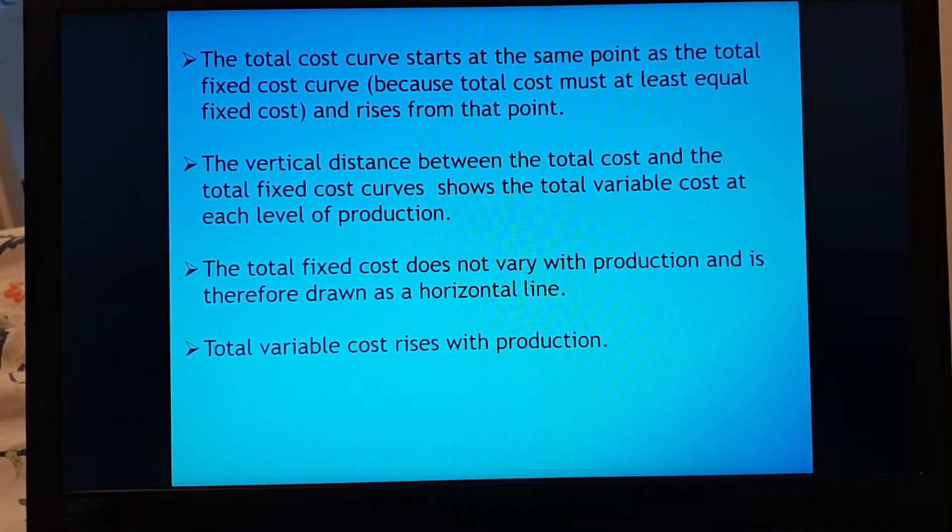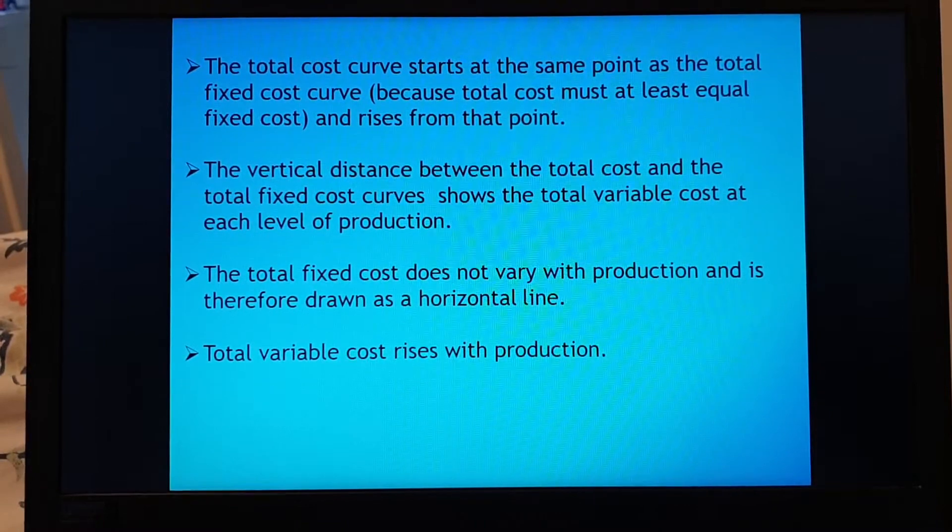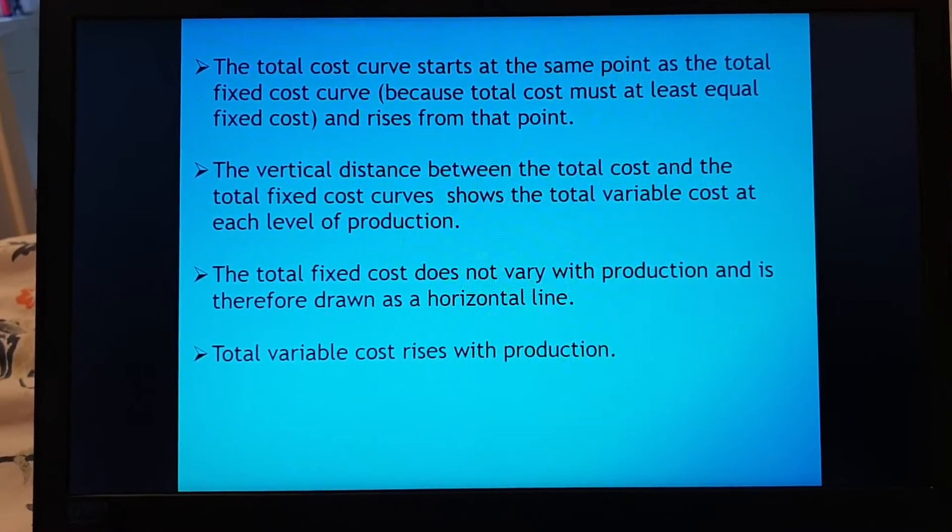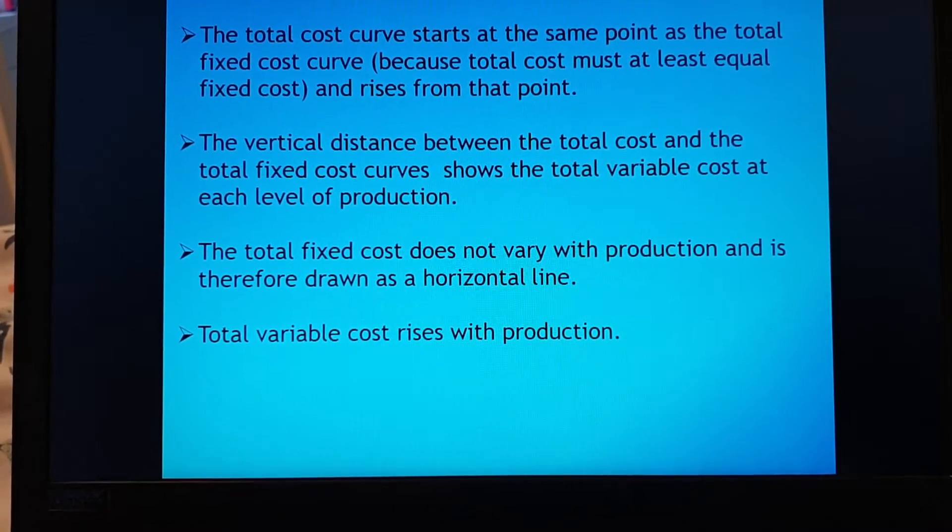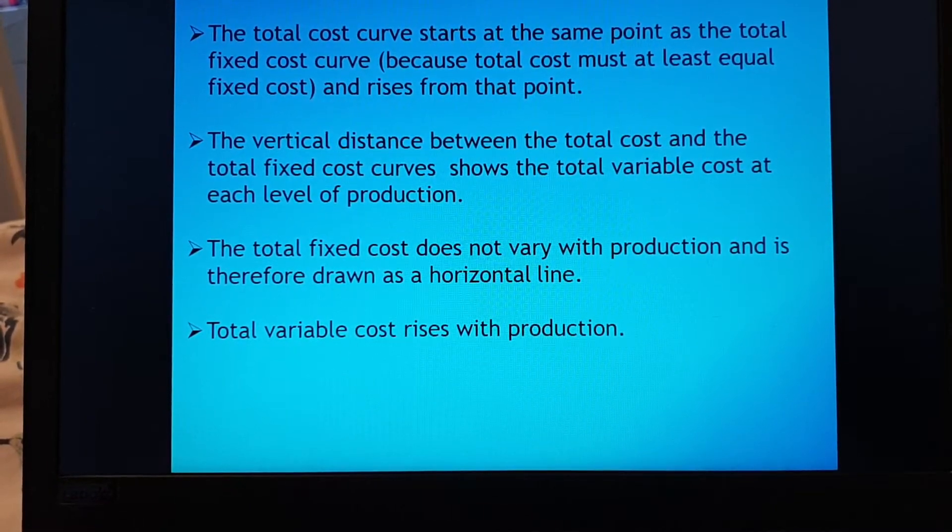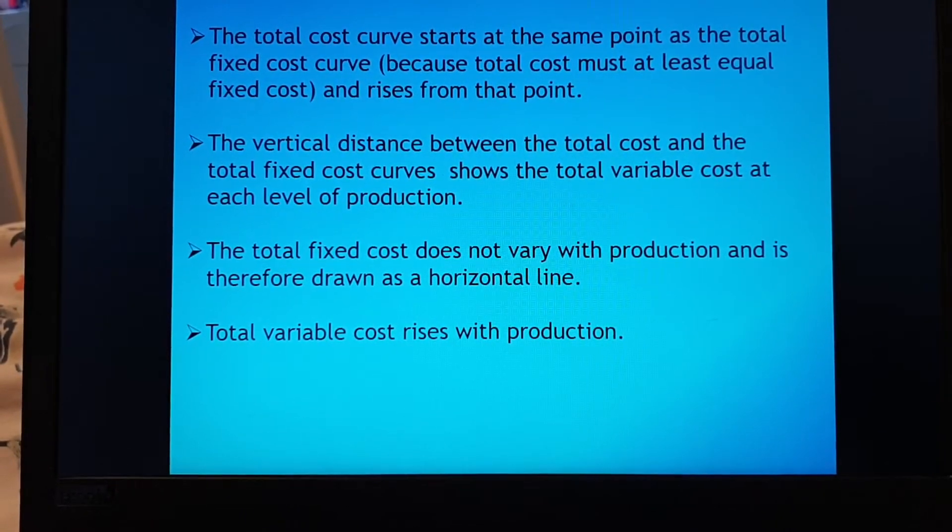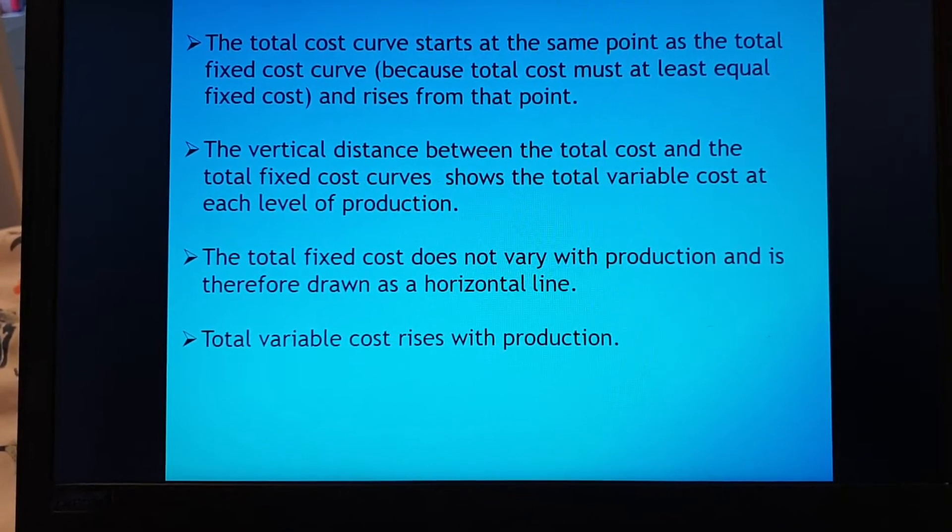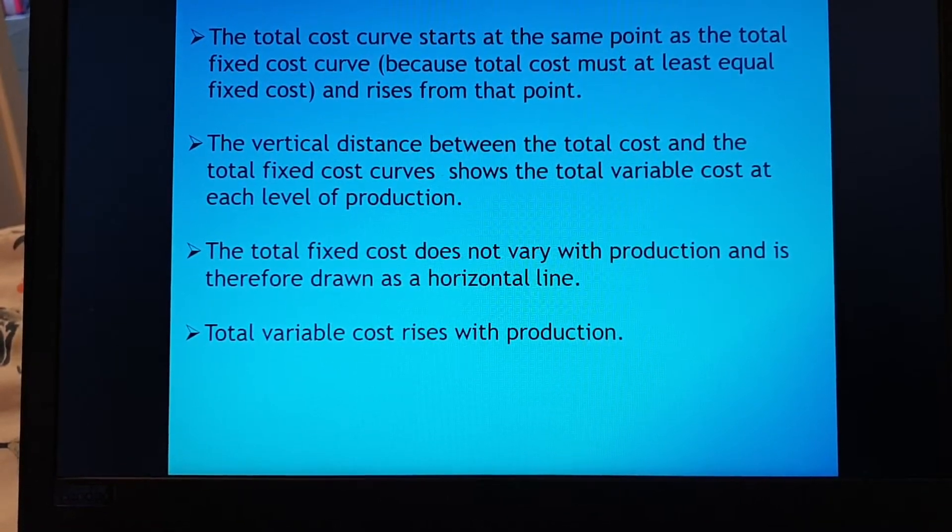Total fixed cost does not vary with production and is therefore drawn as a horizontal line. Total variable cost rises with production because if I produce more goods it's going to cost me more to produce the extra goods. Remember additional good marginal cost refers to the additional cost incurred by producing an additional product and marginal revenue is the additional revenue that I get from producing an additional product.